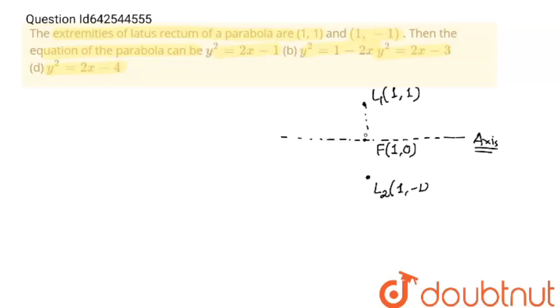And length of latus rectum is 4a in the parabola. So, this parabola can be either this or either this. There are two possibilities for this parabola because only latus rectum are given. So there can be one parabola opening leftward and another parabola opening rightward.